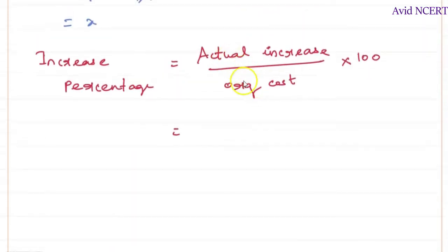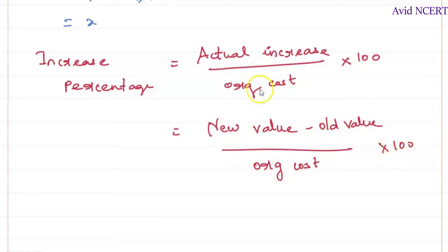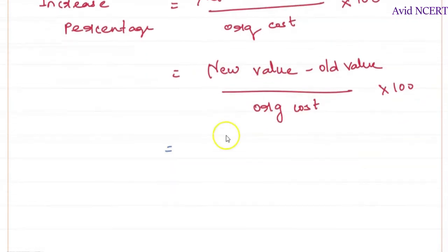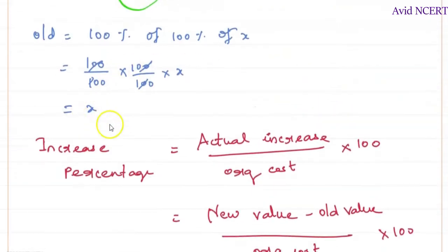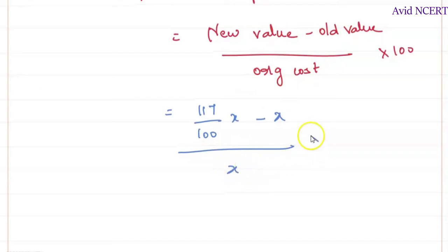So the actual increase is the new value minus the old value, divided by the original value, times 100. The new value is 117 by 100 times X, minus the old value which is X, divided by the original value which is X, times 100.